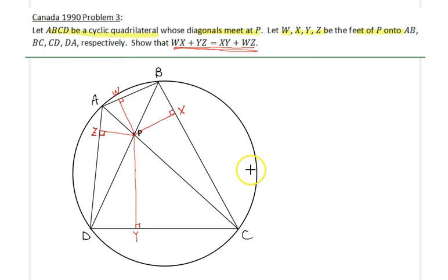That gives us four cyclic points ABCD cyclic, but beyond that we have quite a few other cyclic quadrilaterals such as AZPW is cyclic, WPXB is cyclic, XPYC is cyclic, and PZDY is cyclic.